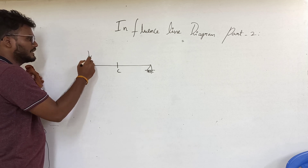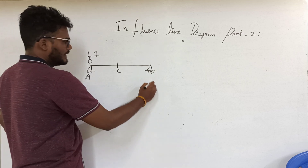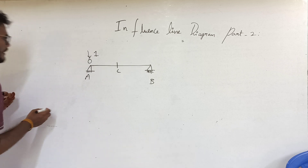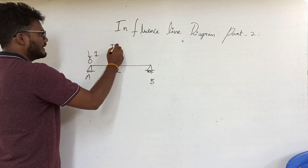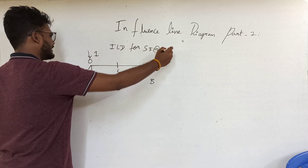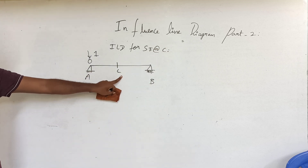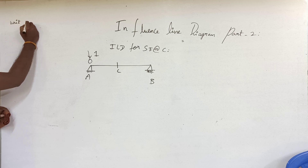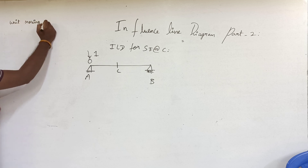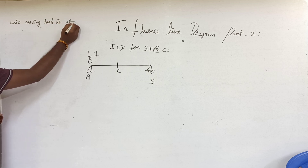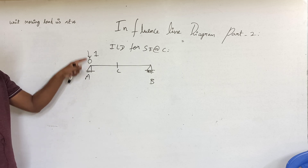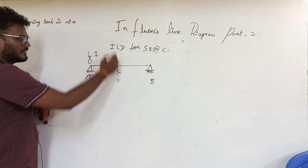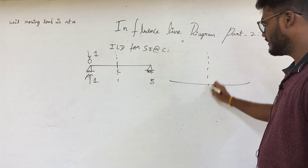A unit load moves from point A to point B. First case: let us calculate the ILD for shear force at C. The unit moving load is at A. When the unit load is on the support, the reaction developed will also be 1. Then what is the shear force at section C? There is a shortcut.